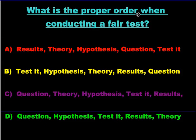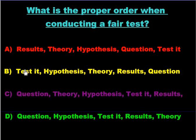And the last question: what is the proper order when conducting a fair test? Go ahead and pause the video to figure out the answer. We know that every fair test has to start with a question or a problem. So options A and B are automatically wrong because they don't start with a question. You've got to be wondering first — hey, what's going on, how did that happen? That has to come first. Then what comes next? Theory comes at the very end — so it has to be D: question, hypothesis, then you do the test, you get your results, and then you get your theory.